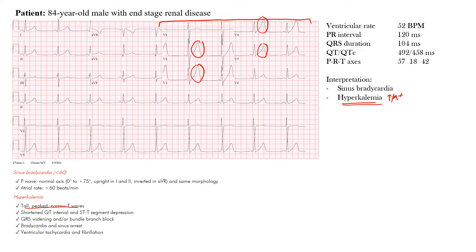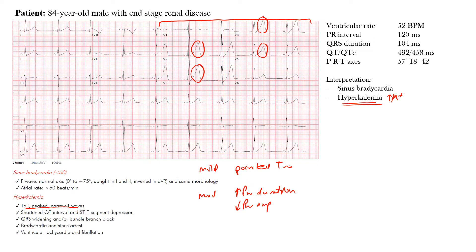As the potassium level gets greater, we see different changes. Starting from pointed T waves as the first change in mild cases, in moderate cases we start to see an increase in P wave duration — the width gets wider — a decrease in P wave amplitude, and an increase in the PR interval. This may indicate AV block. You may also see ST elevation in leads V1 through V3.